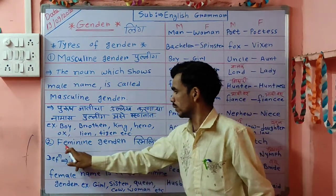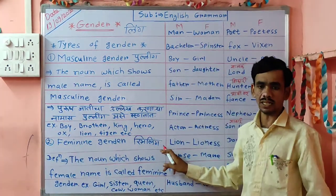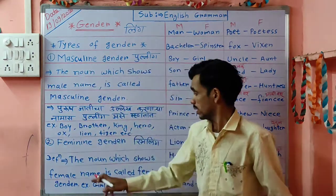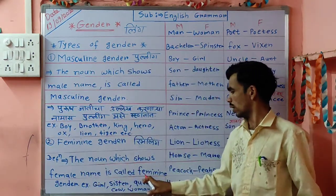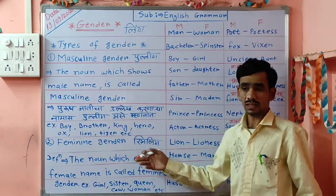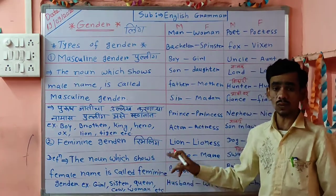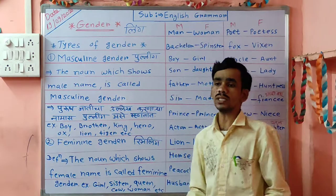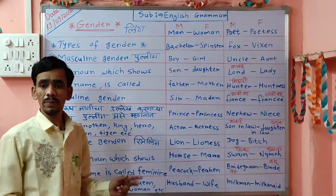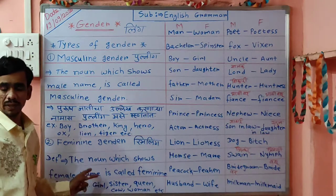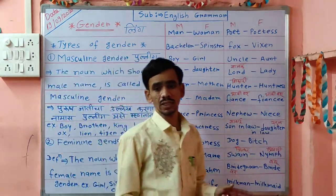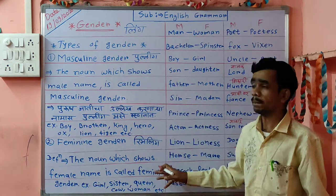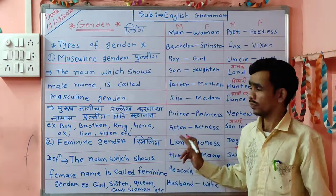Then the second one is Feminine gender. Feminine gender means Stri lingam in Marathi. The definition of feminine gender: the noun which shows female qualities or female sex is called Feminine gender. In Marathi, the noun referring to Stri jati is called Stri lingam. Both types — Masculine and Feminine — are very easy types.